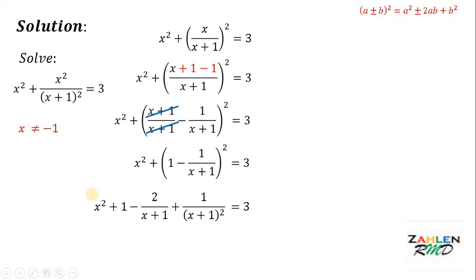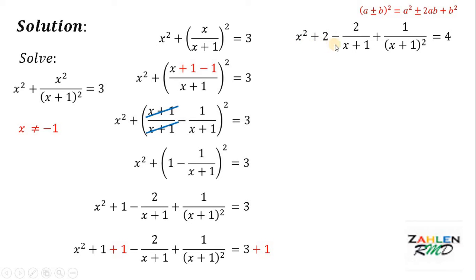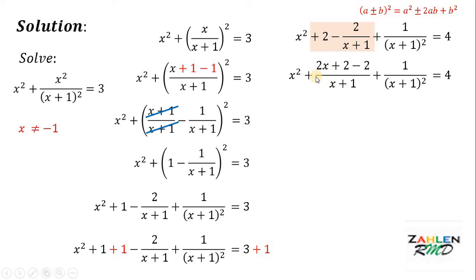Now here's the tricky part. What we're going to do is make the left-hand side a perfect square trinomial. To do that, we need to add 1 to both sides. If we do that, we get x squared plus 2 minus 2 over x plus 1 plus 1 over x plus 1 squared equals 4. Next, combine the two terms 2 minus 2 over x plus 1. If we do that, we get 2x plus 2 minus 2 all over x plus 1.